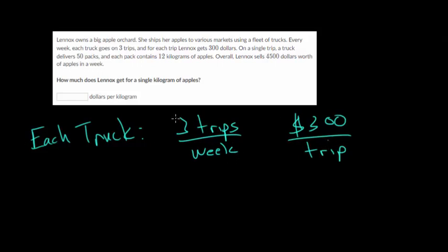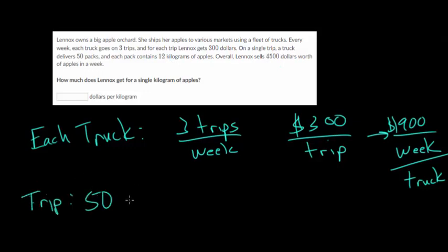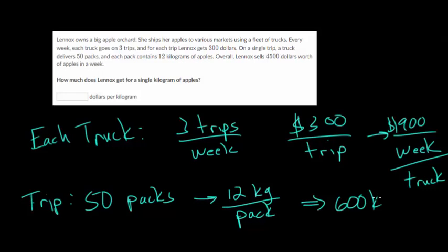You can kind of figure this out right away. If there are three trips in a week and each trip is $300, that would be $900 for the week. That's per truck, so it's $900 a week per truck. On a single trip, a truck delivers 50 packs. Each pack contains 12 kilograms of apples. Overall, Linux sells $4,500 worth of apples in a week. So per trip, there are 50 packs, and there are 12 kilograms in each pack. We can multiply to figure out our total weight in one trip. 50 times 10 would be 500, 50 times two is 100, so this would be 600 kilograms per trip.